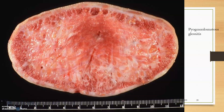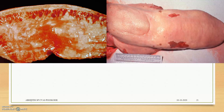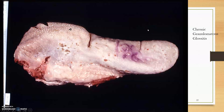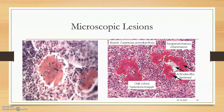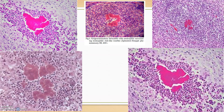This is pyogranulomatous glossitis — you can see small hemorrhagic spots and small pyogranulomatous spots. This is the ulcerative tongue, and this is chronic granulomatous glossitis with granuloma showing necrosis — a necrotized tongue. You can see the small club colony that is the Splendore-Hoeppli phenomenon. The bacillus lignieres will be in the center — rod-shaped — and there will be a rosette-shaped club-like colony surrounding it.